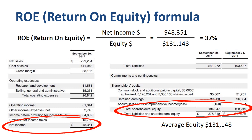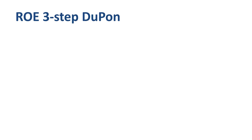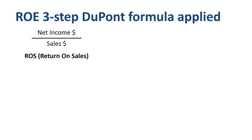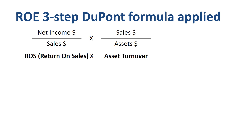But what is driving that performance? What are its components? That's where the DuPont formula and DuPont analysis come in. The three-step DuPont ROE formula takes the high level calculation and splits it into three sections: net income over sales, or return on sales; sales over assets, or asset turnover; and assets over equity, or leverage.